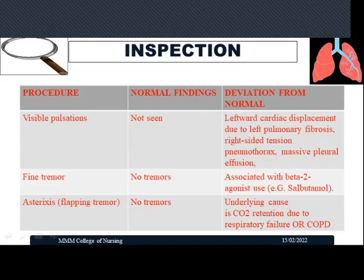In inspection, also look for visible pulsations over the anterior or posterior chest wall. Normally, no visible pulsations should be seen. However, in cases of cardiac displacement due to left pulmonary fibrosis, pneumothorax, or massive pleural effusion, visible pulsations over the chest wall can be observed, which is considered abnormal.